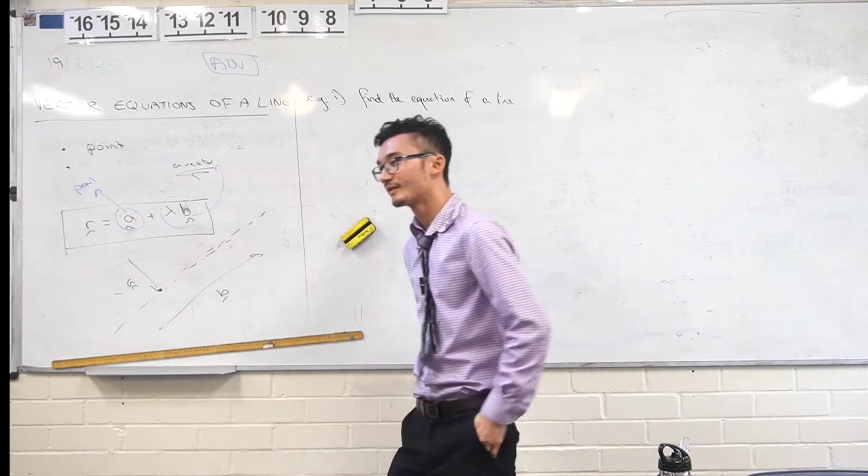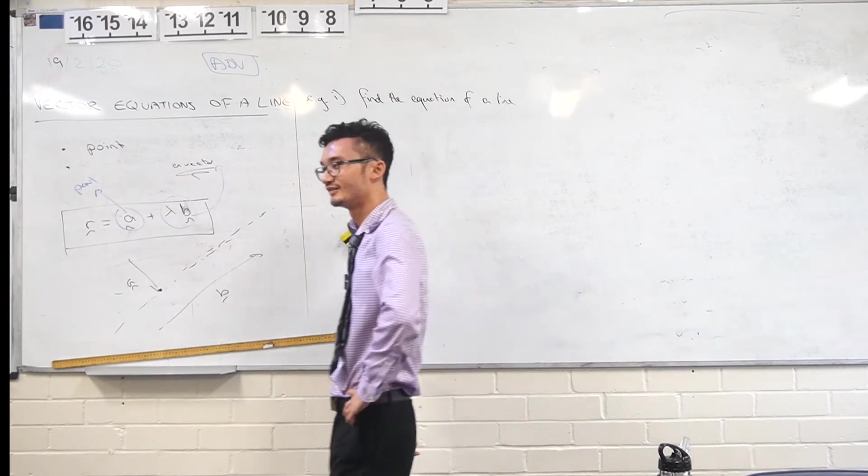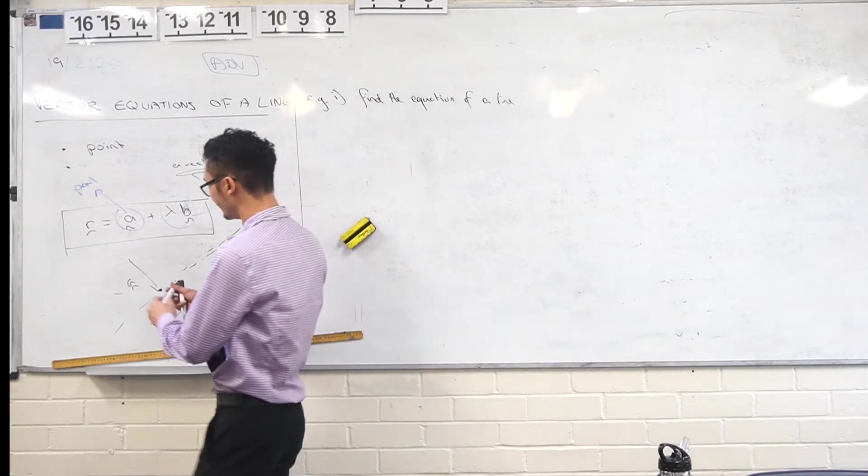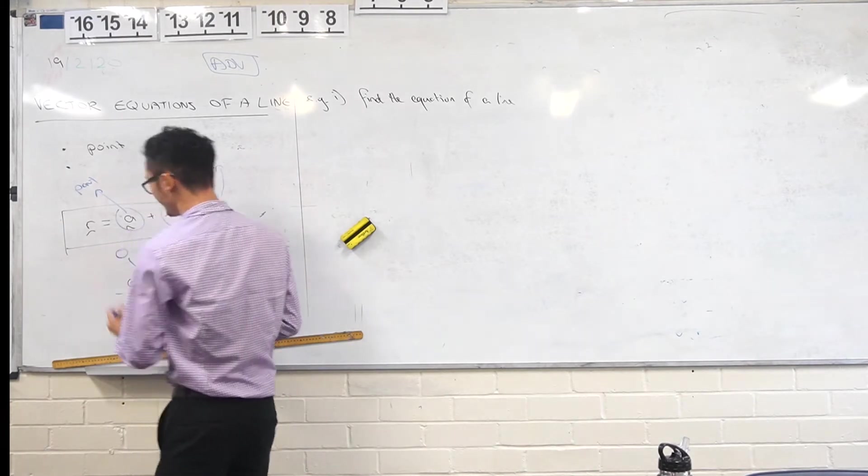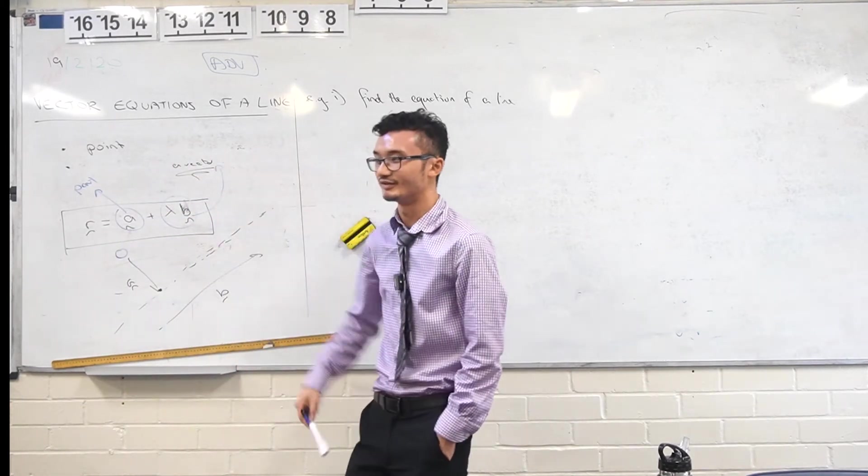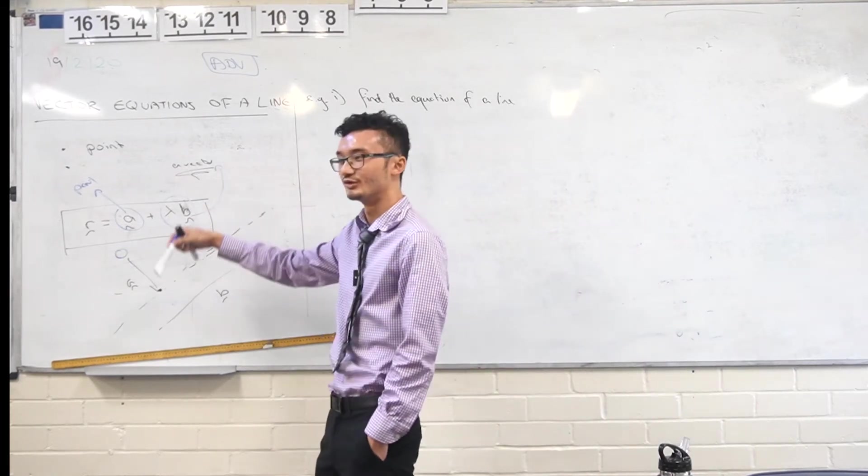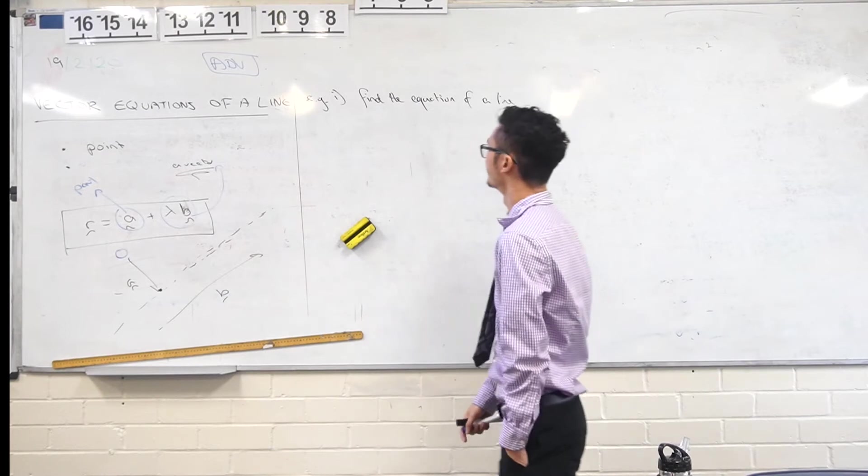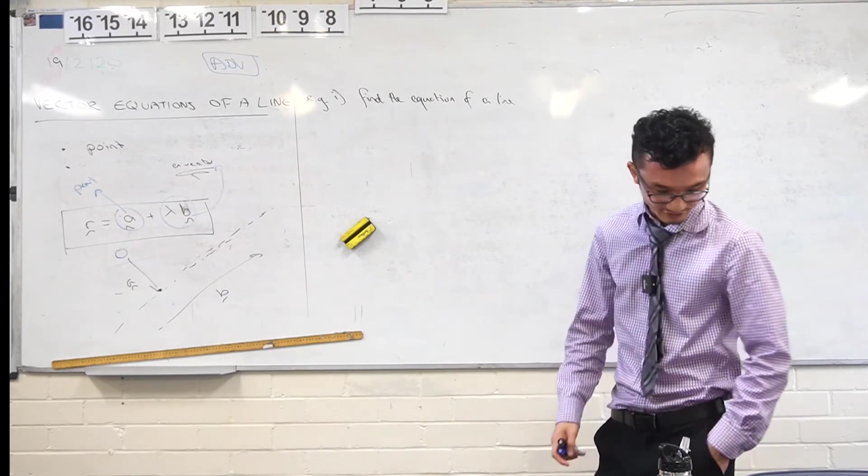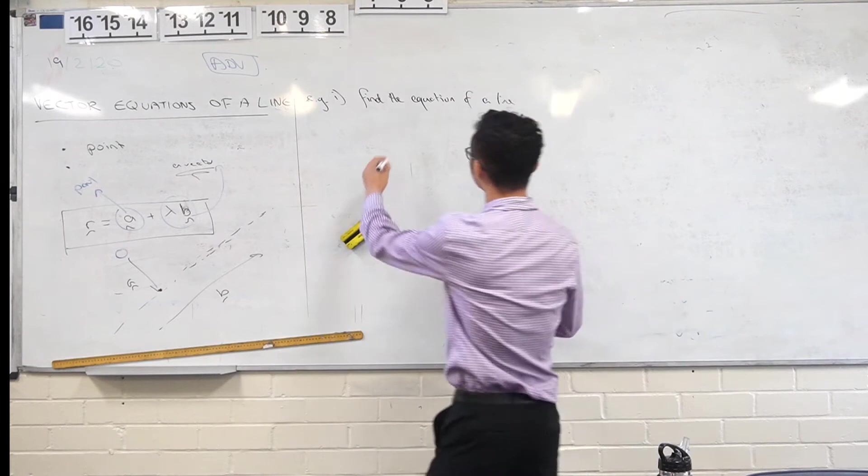A is sort of like from the origin. Yeah, it has to be from the origin. And then B, that can just be anywhere, right? That's the direction. But we give it as position coordinates, so it's usually from the origin as well, right? So find the equation of a line through these two points. Same as always.